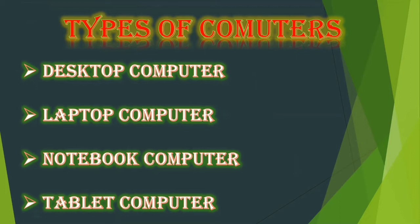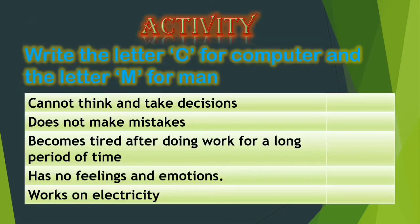The first activity is: write the letter C for computer and the letter M for man for the following statements. Now let us see the first one: cannot think and take decisions. Now tell me children, who cannot think and take decisions? It is computer. So you have to write letter C.